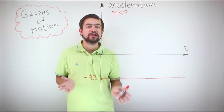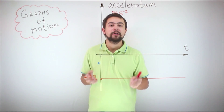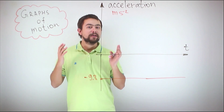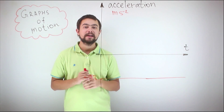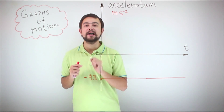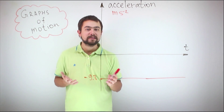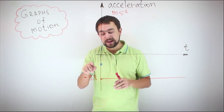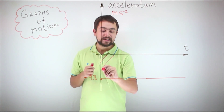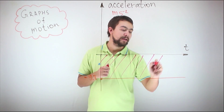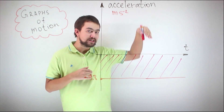Acceleration is the rate of change of velocity; therefore, acceleration is also a vector. For a body falling freely under gravity from a tall building with no air resistance, the acceleration is minus 9.8 meters per second squared — meaning every second the velocity changes by 9.8 meters per second. The area under the acceleration-time graph is equal to the change in velocity, and here the change in velocity is negative because the acceleration is downwards.